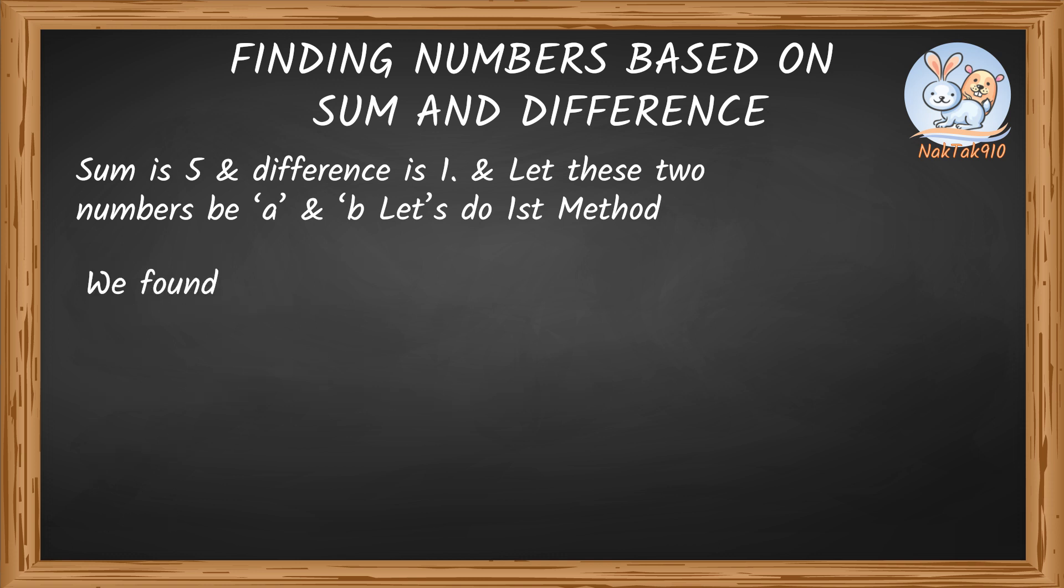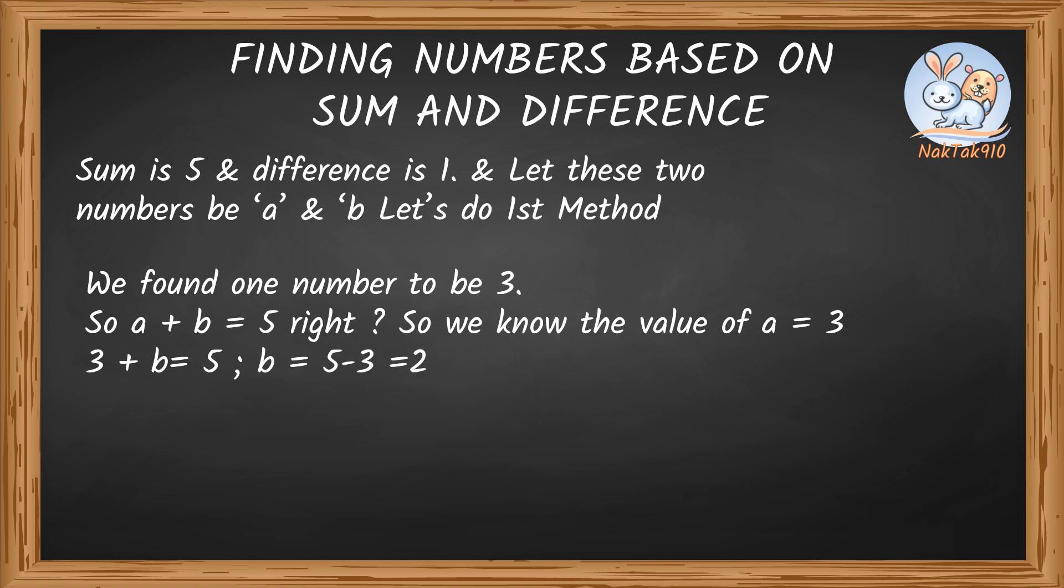We found one number to be 3. So a plus b equals 5, right? So we now know the value of a, which is 3. 3 plus b equals 5. b equals 5 minus 3 equals 2. So the two numbers are 2 and 3.